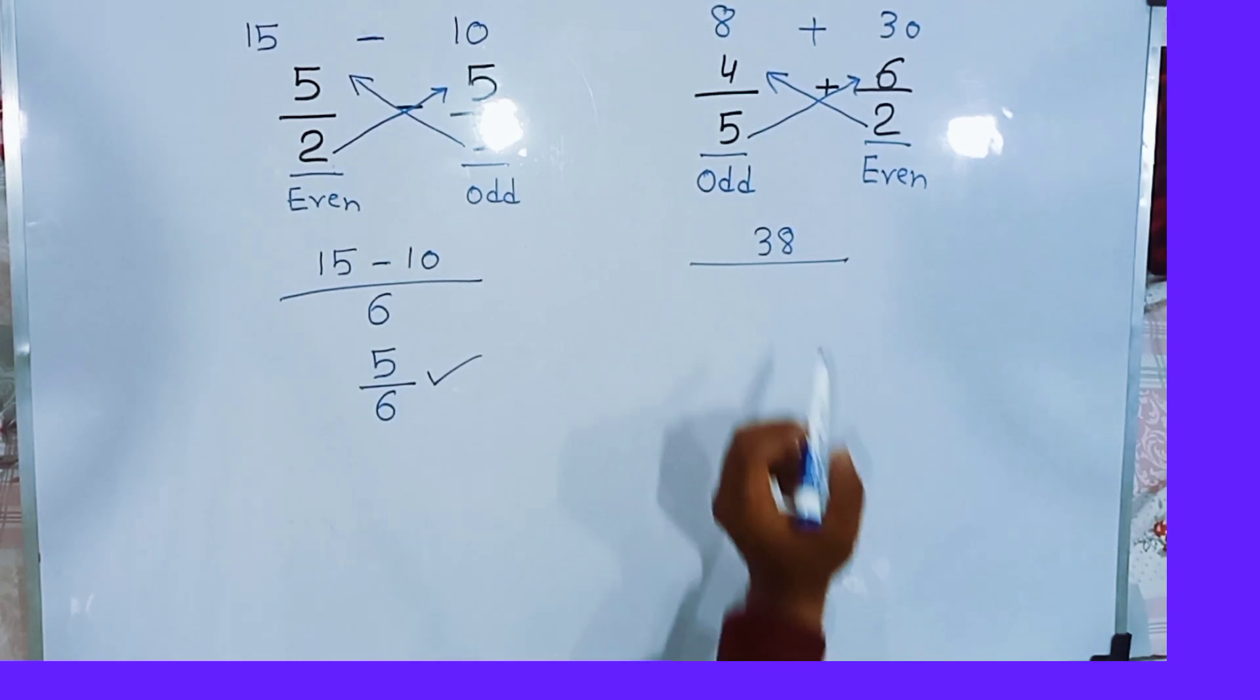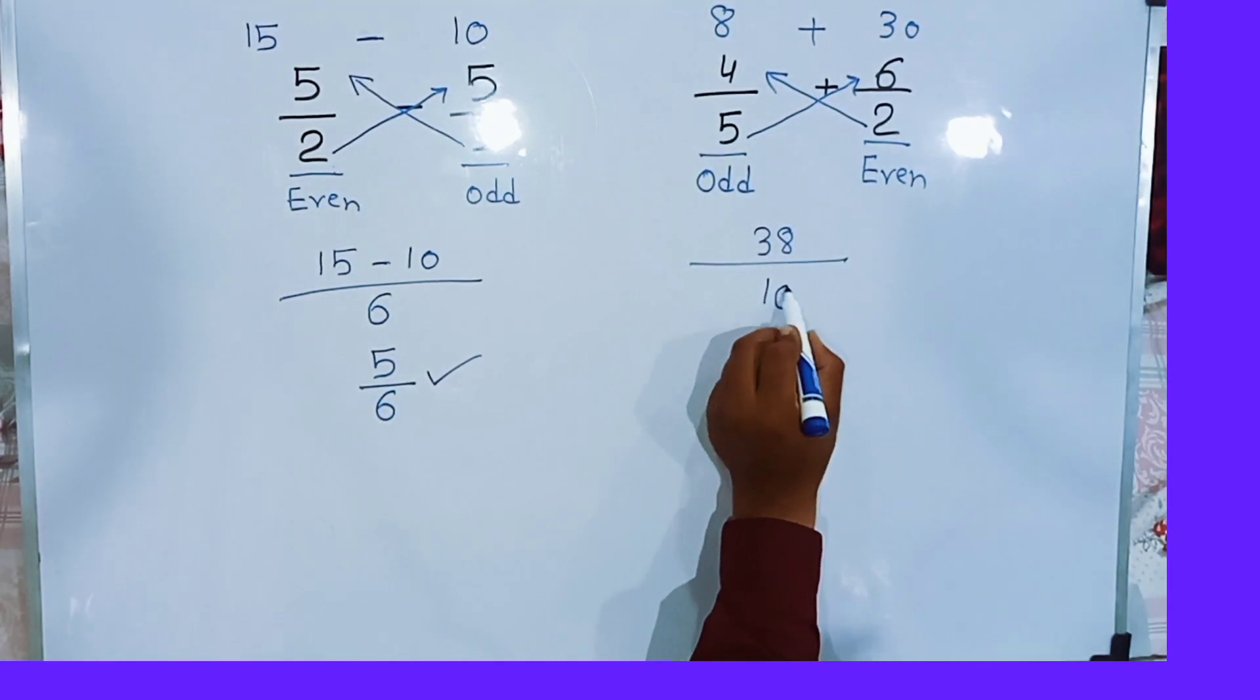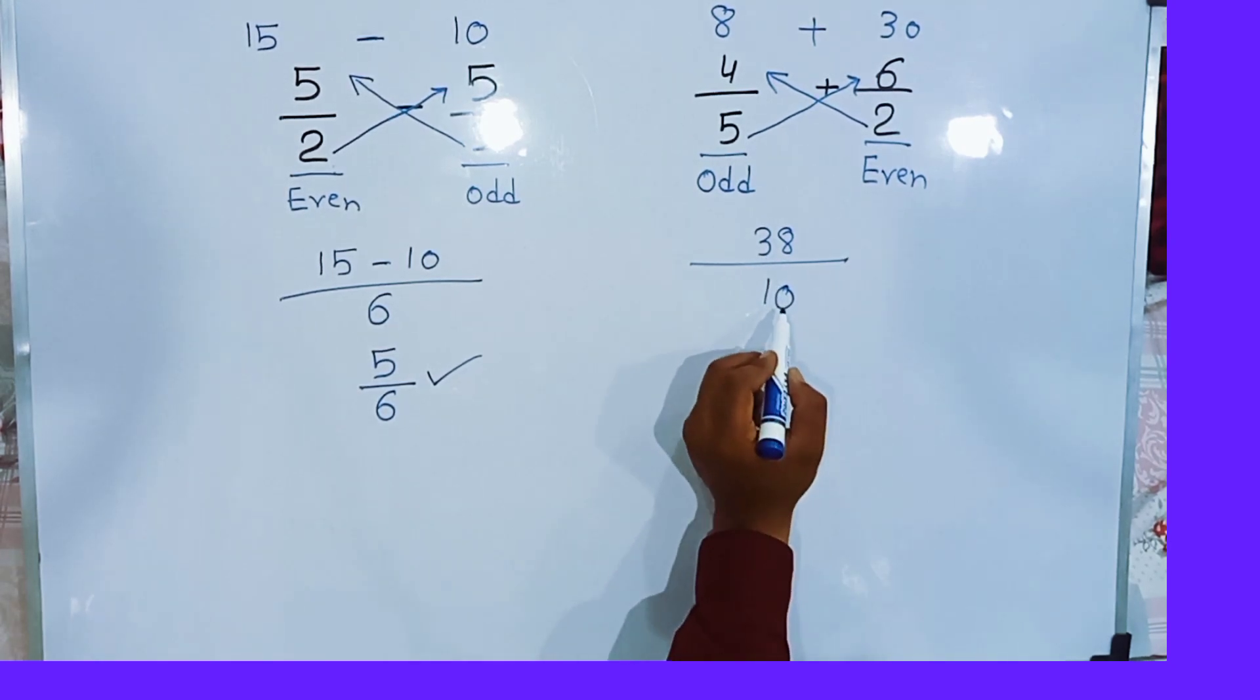We will simply multiply 5 with 2. 5 twos are 10. So 38 by 10, this is the final answer.